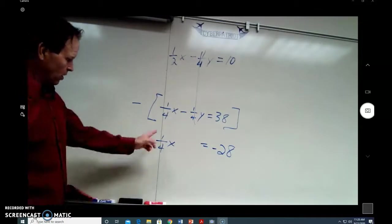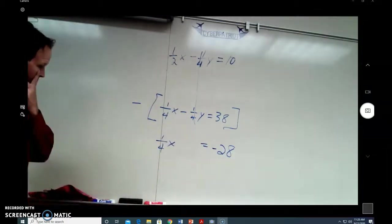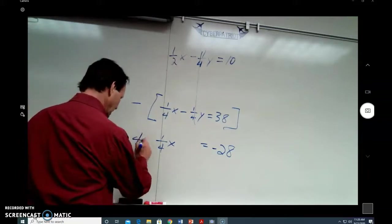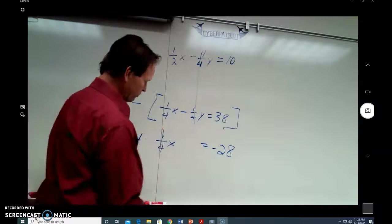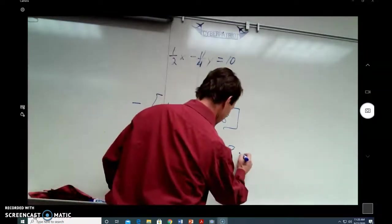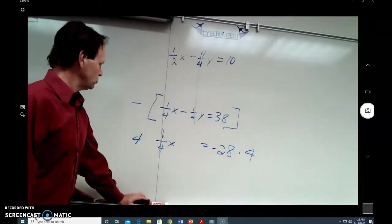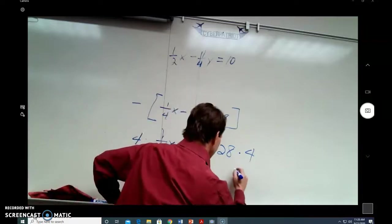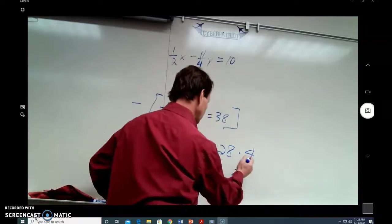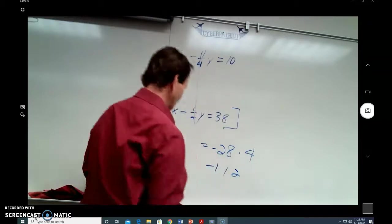And so, 1 fourth x equals negative 28. That's a pretty simple equation. Multiply both sides by 4. That cancels the 1 fourth. And 4 times negative 28 is going to give us, what is that? 4 times 8 is 32. 4 times 2 is 8 plus 3. 11. Negative 1, 12.